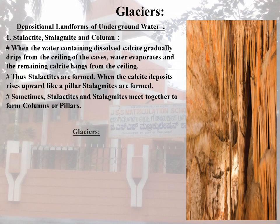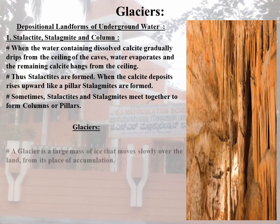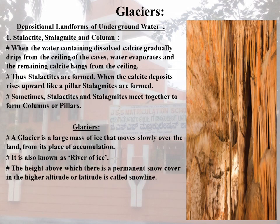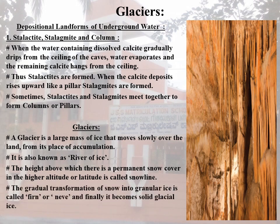Next we are going to explain Glaciers. A glacier is a large mass of ice that moves slowly over the land from its place of accumulation. It is also known as a River of Ice. The place of accumulation is called a Snow Field. The height above which there is a permanent snow cover at higher altitudes or latitudes is called the Snow Line. Higher the latitude, lower the snow line from sea level.